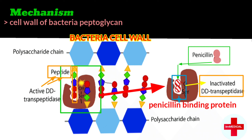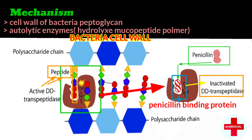When we block the transpeptidase, then peptidoglycan or the cell wall cannot be made or biosynthesized. When the cell wall is not synthesized, the bacteria release active autolytic enzymes. The name of these enzymes is hydrolase macropeptide polymers. They will rupture the cell wall of the bacteria. This is the mechanism of penicillin.